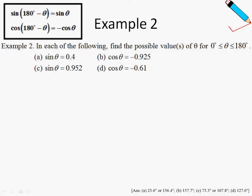In example number two, we are asked to find theta in the range 0 to 180 degrees. This means we are asked to find the obtuse angle theta.